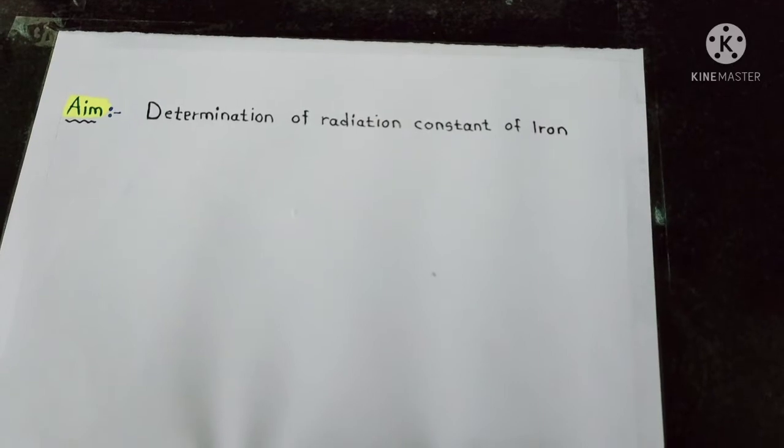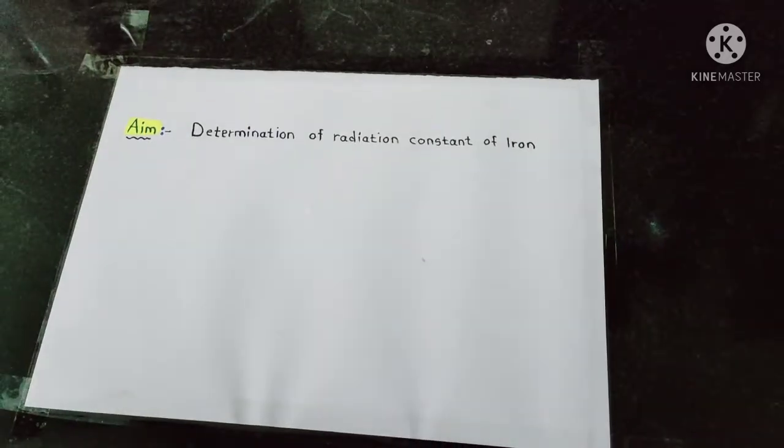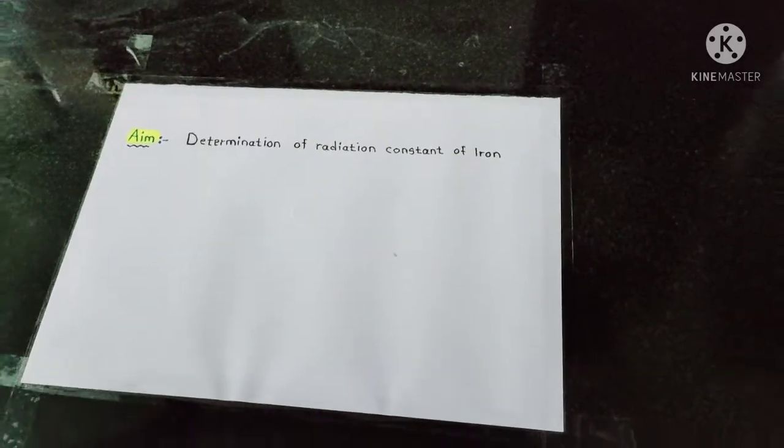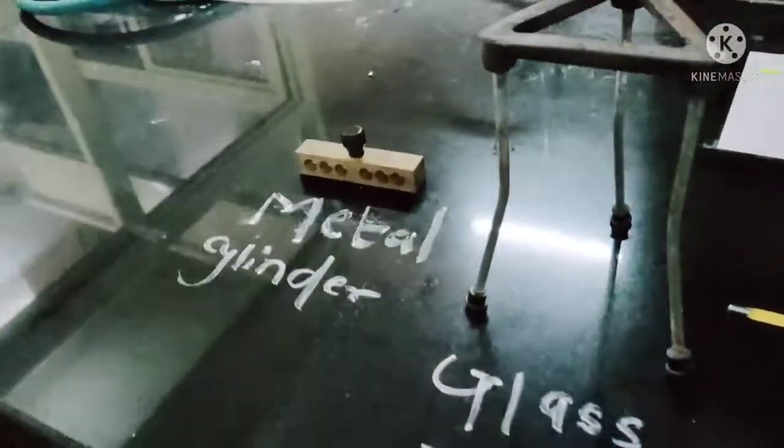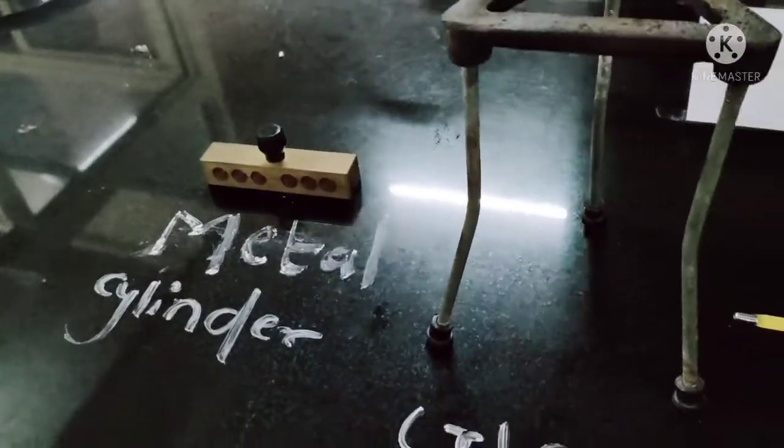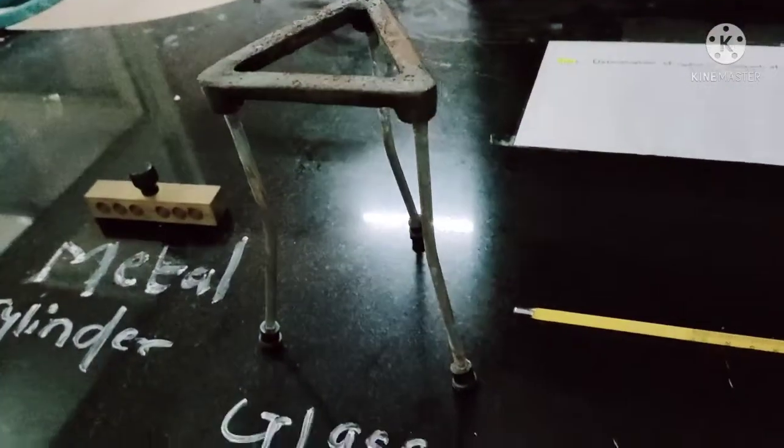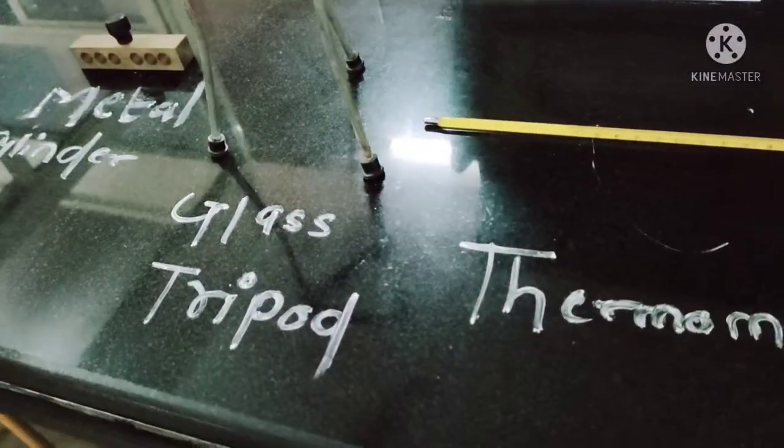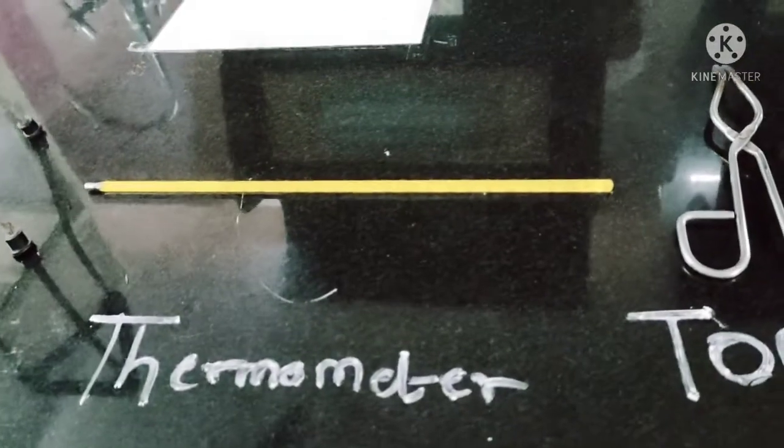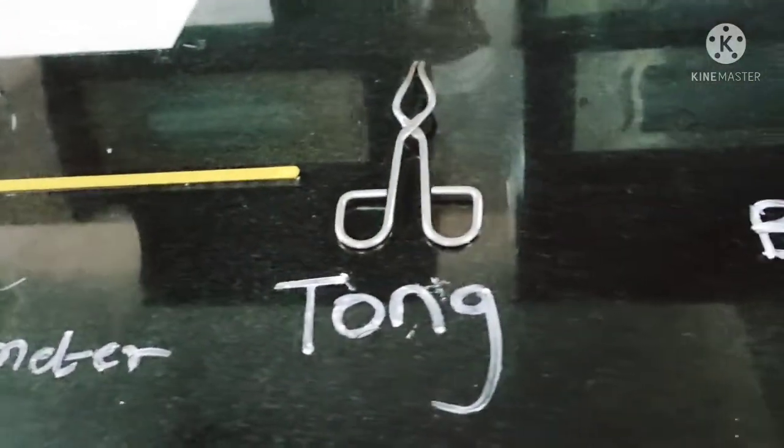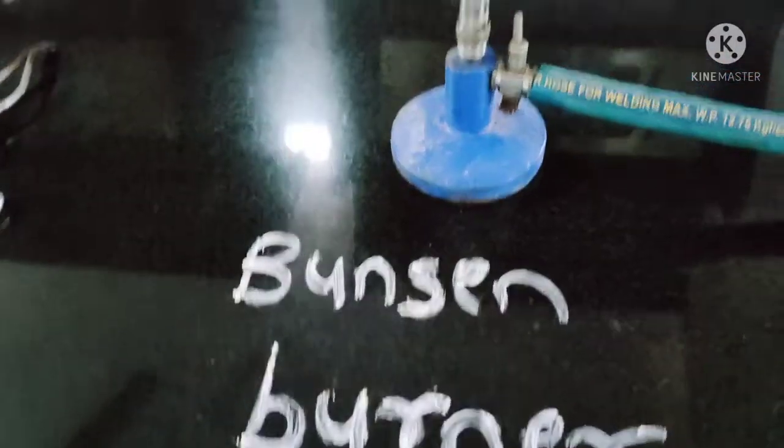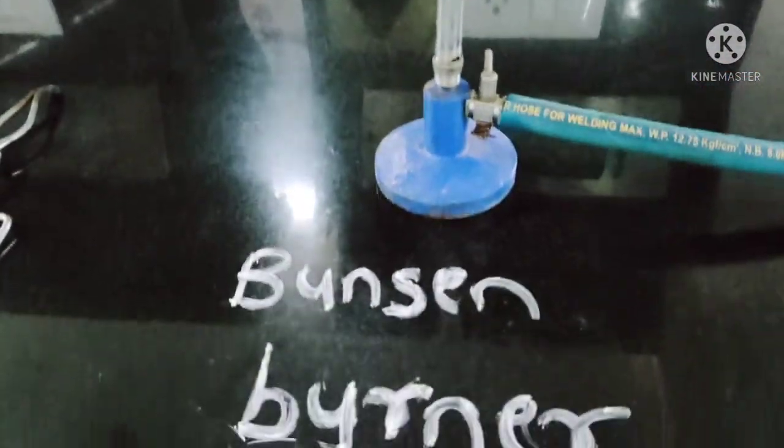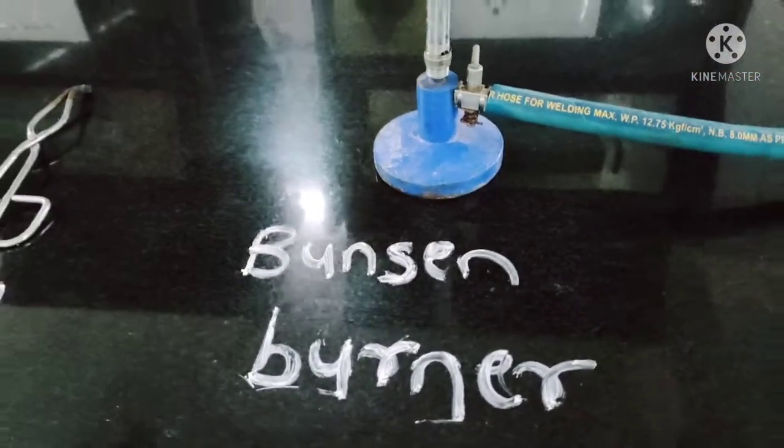So, the aim of first practical is determination of radiation constant of iron. For perform this practical we require metal cylinder, glass tripod, thermometer, tungsten burner. Metal cylinder is made up of iron.